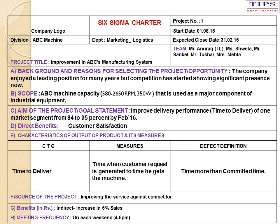This is an example of a Six Sigma charter, wherein the project number, start date, expected close date, the team, project title, background and reasons for selecting the project, scope of the project, aim of the project, benefits, characteristics of output of the project such as CTQ, measures and defect definition, source of the project, the benefits resulting — direct and indirect — and at what frequency the team will be meeting are all specified.